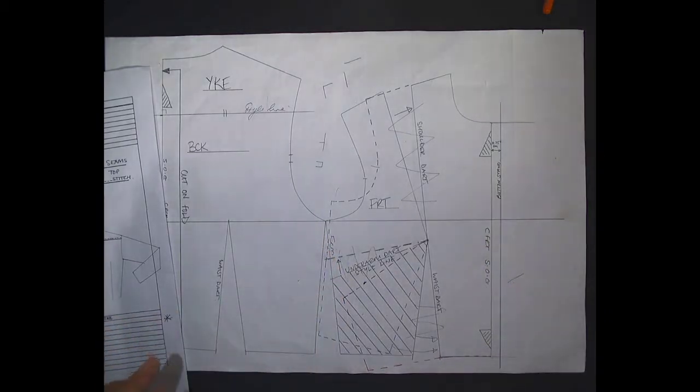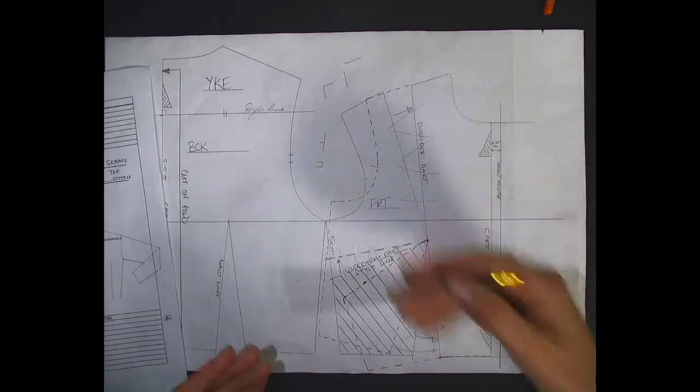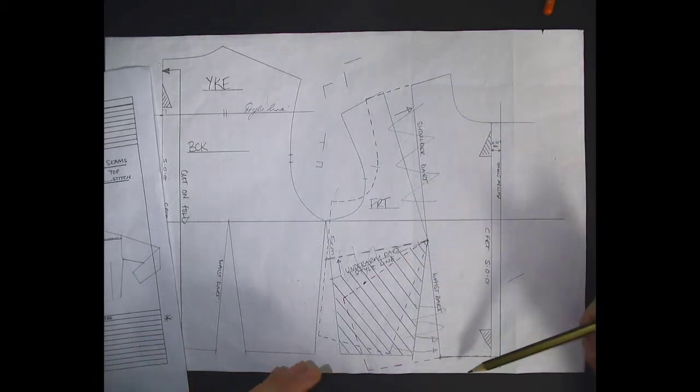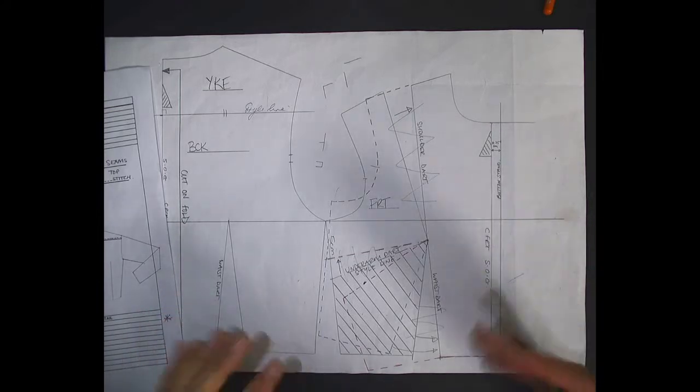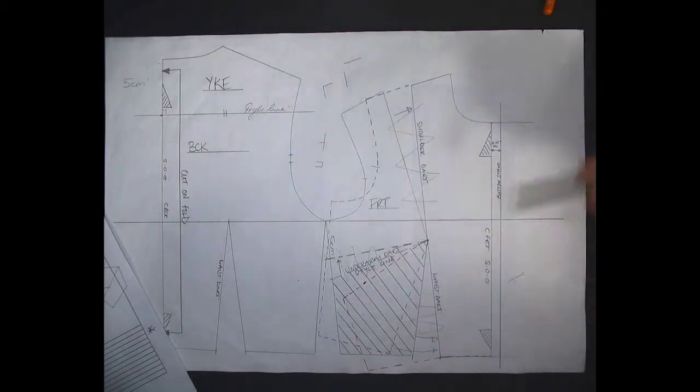The difference with a pattern piece is that it has seam allowance attached. The rule with full-scale patterns is generally one centimeter seam allowance around the garment and two centimeters at the hem. Because we're working half scale, everything's been scaled down by half, so it'll be half a centimeter all the way around and one centimeter at the hem.